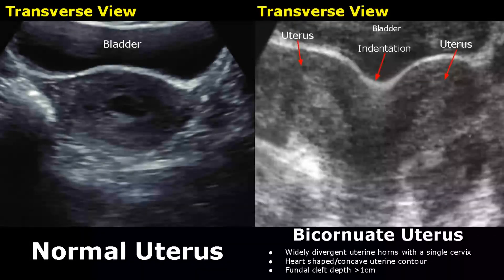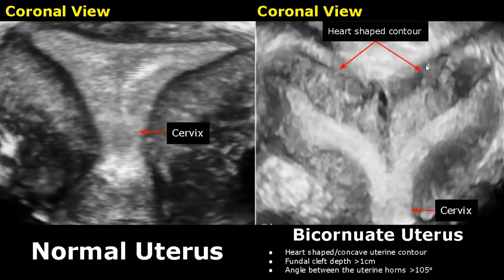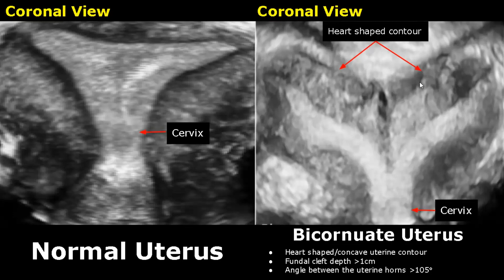In a bicornuate uterus, the uterine horns are widely divergent and there is usually a single cervix. The uterine contour is heart-shaped — it is either heart-shaped or concave-shaped, with a concave-shaped indentation visible here. In this 3D coronal view, we can clearly see a heart-shaped uterine contour. The fundal cleft has a depth greater than 1 cm, and the angle between the uterine horns will be an obtuse angle greater than 105 degrees. Both uterine horns are connected to a single cervix.